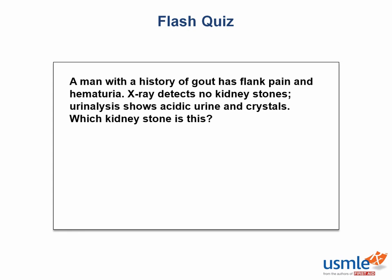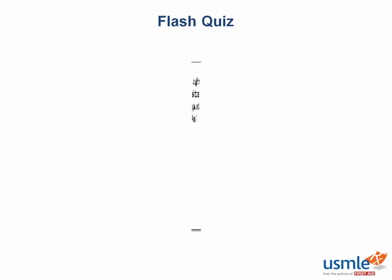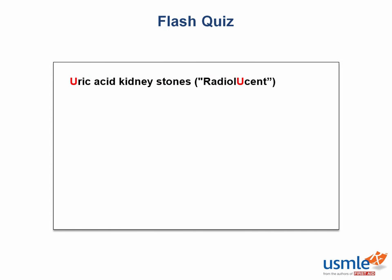Time for a flash quiz. A man with a history of gout has flank pain and hematuria. X-ray detects no kidney stones. Analysis shows acidic urine and crystals. Which kidney stone is this? Uric acid kidney stones. The giveaway is that the stones are radiolucent and the patient has a personal history of gout. The acidic pH and hyperuricemia associated with gout both favor the formation of uric acid kidney stones.